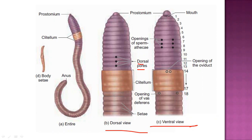The earthworm comes under hermaphrodites — in a single animal there are two gonads, both male testis and female ovary. On the dorsal side they have three dots, but on the ventral side they have three pairs of openings, especially in the region of segments 6, 7, 8, and 9.